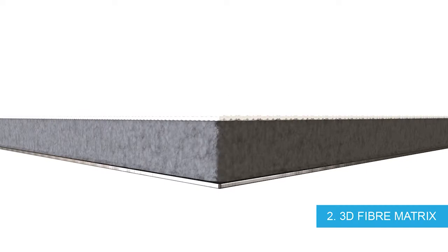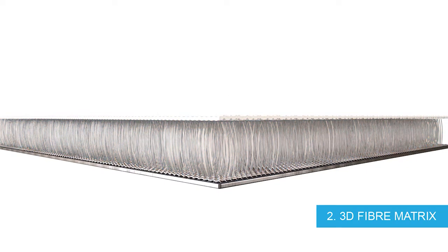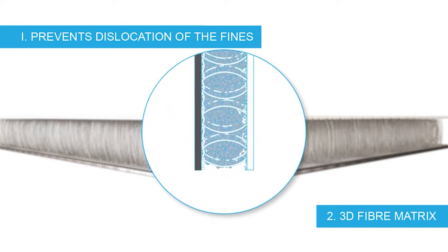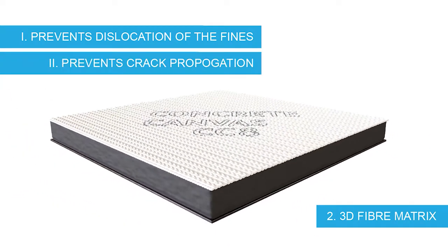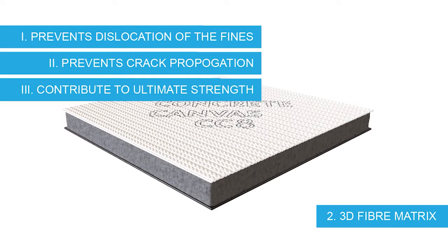The second element is a 3D matrix of synthetic fibers that perform three functions. Firstly, the fibers prevent dislocation of the cement fines, meaning the material can be hung on a vertical plane whilst maintaining a uniform density. Secondly, the fibers prevent crack propagation once the material has set. Thirdly, the fibers in the matrix contribute to the ultimate tensile strength of the material.